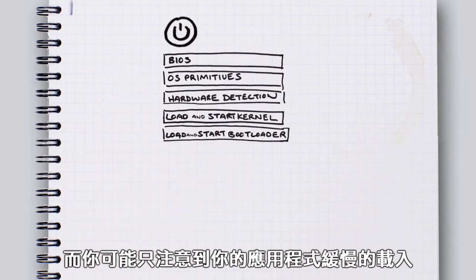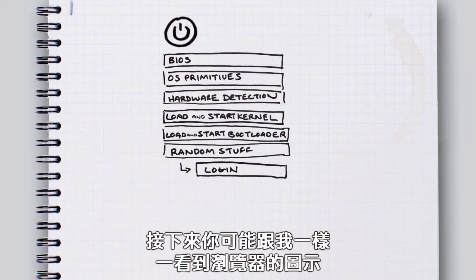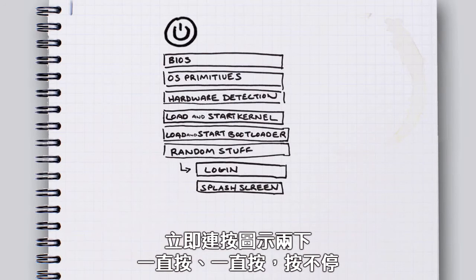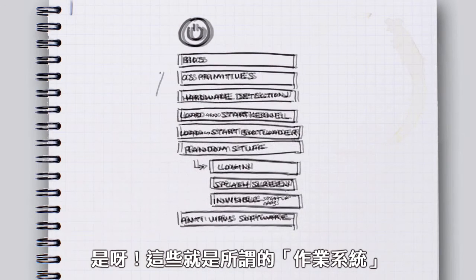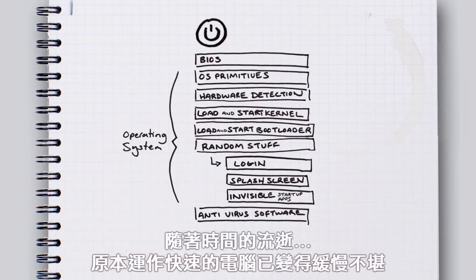What you probably notice is that your programs begin loading up slowly. And if you're like me, as soon as you see your web browser icon appear, you're double-clicking it over and over. Let's go, buddy — I got some emails to read. Well, all of this stuff is called your operating system.